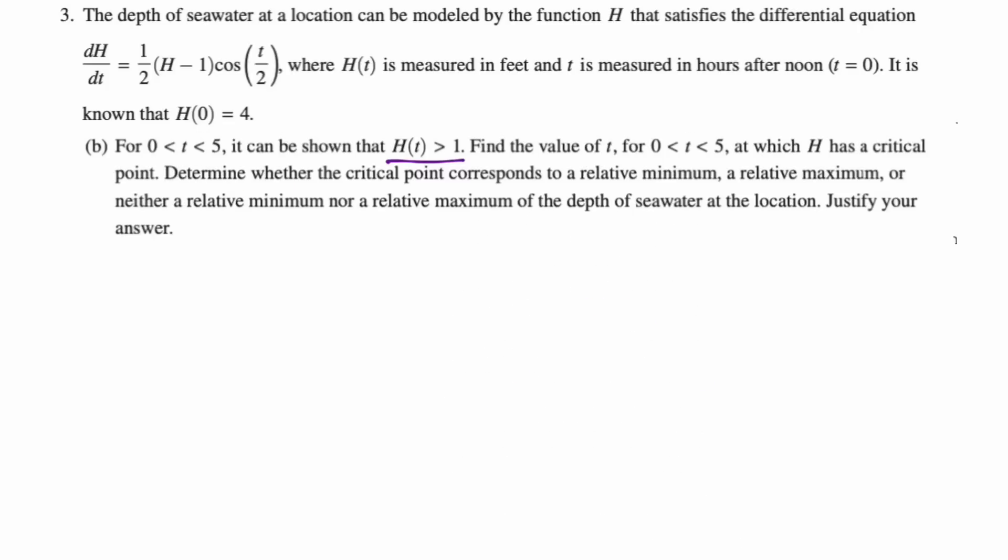Let's take a look at part B. Between zero and five, it can be shown that h of t is greater than one. So h of t is greater than one, that's probably important. If you look at the differential equation, it is important that h is greater than one because you have an h minus one there. So if h is greater than one, then h minus one is positive.